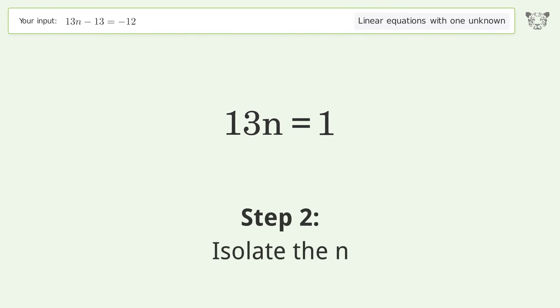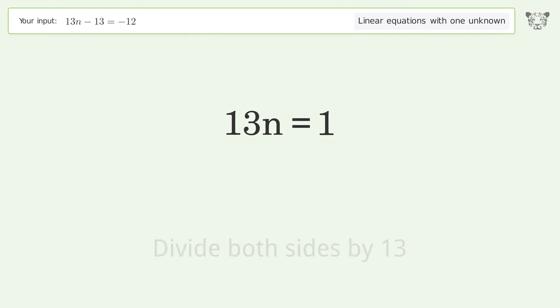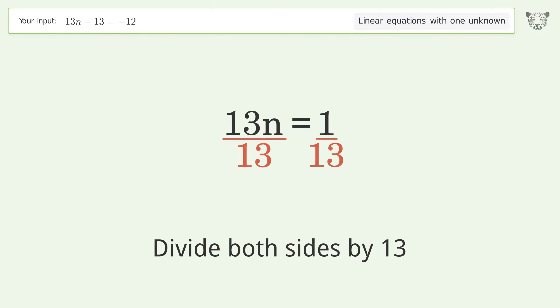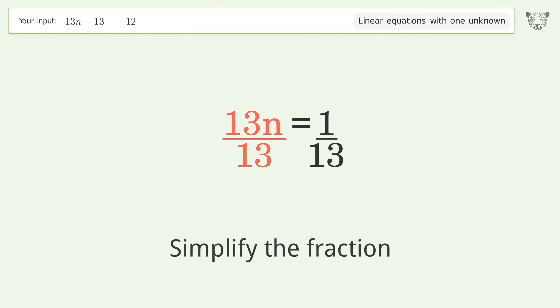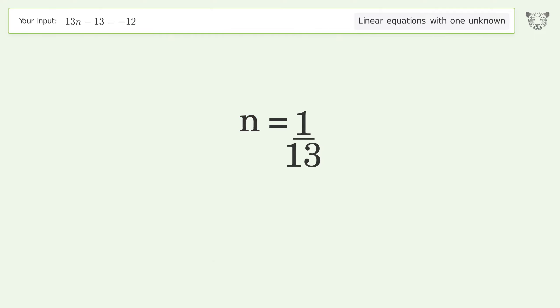Isolate the n. Divide both sides by 13. Simplify the fraction. And so the final result is n equals 1 over 13.